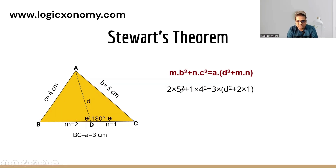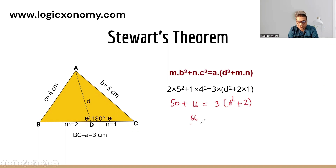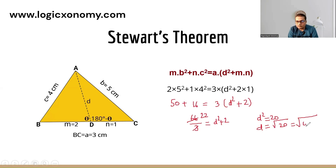Calculating: 25×2 = 50, and 16×1 = 16. So 50 + 16 = 66. Then 66/3 = 22 = d² + 2. Therefore d² = 20, and d = √20 = √(4×5). Finally, d = 2√5 centimeters.